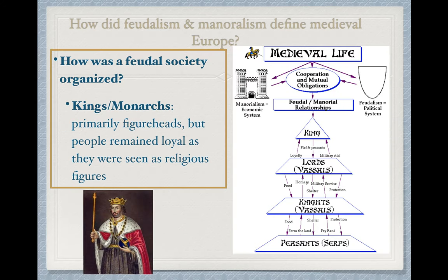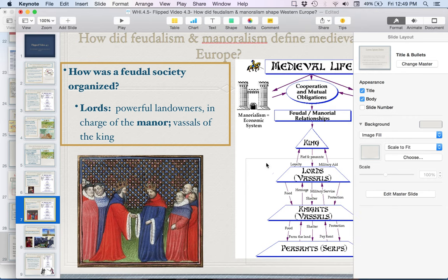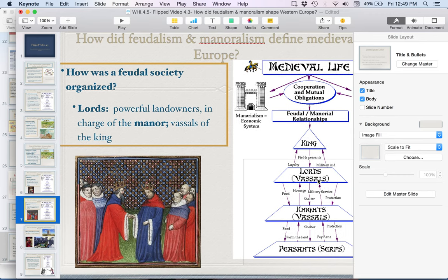So how is this organized? Kings or monarchs were primarily figureheads at this point. People remained loyal because kings were seen as religious figures, much as we saw with Charlemagne and his relationship with the pope. But the real day-to-day existence of feudalism really was at the level of lords, knights, and serfs. Lords were powerful landowners in charge of the manor, and they were vassals of the king — should the king call upon them for military service, they would ensure knights and sometimes even peasants were called up to defend the king.